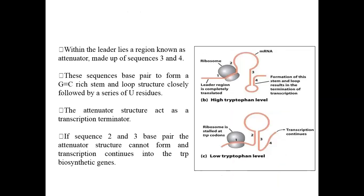Within this attenuator sequence there are four regions, marked as 1, 2, 3, and 4. Regions 1 and 2, 2 and 3, or 3 and 4 can be base-paired with each other because they are rich in GC content, allowing stem-and-loop structures to form. When regions 3 and 4 are base-paired, this attenuator structure acts as a transcription terminator. When regions 2 and 3 are base-paired, the attenuator structure cannot be formed.